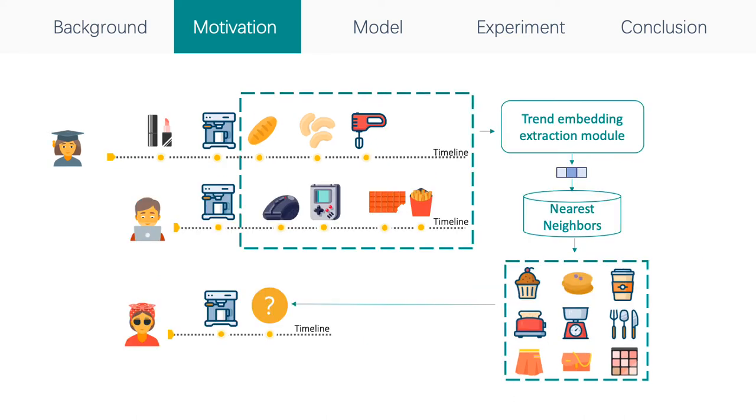We argue that preferences changing over time of similar users is an extra important factor to model user preferences. Such chains can be summarized from the relative future behaviors of users with similar interests. Specifically, for an inspected user, other users with similar interests chance to have common behaviors with the inspected user, and the behaviors that happen after the common behavior can be viewed as the relative future behaviors.